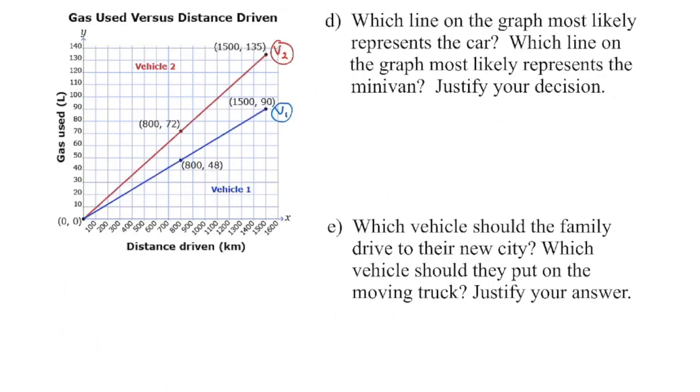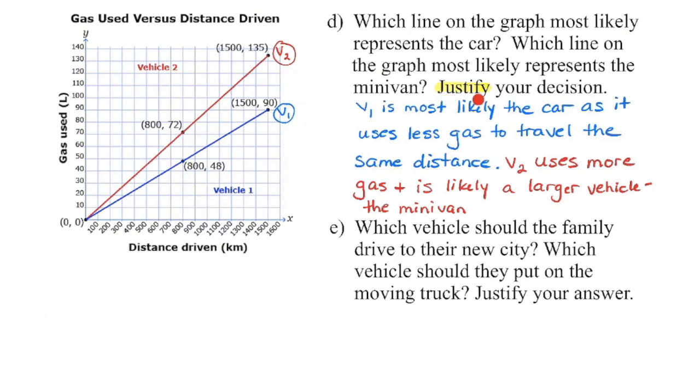So which line do you think represents the car and which line do you think represents the minivan? And then keep in mind that the family is traveling 2,400 kilometers. That's an awfully far distance. Which vehicle would you prefer to take to travel in for that length of time? Justify means you need to provide a reason as to why you reached a particular conclusion. So we could conclude that because vehicle two is using more gas, it's more likely to be the larger vehicle or the minivan. The vehicle using less gas to travel the same distance is more likely the car a little bit better on gas.